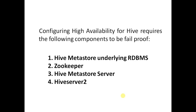In this video we will discuss Hive High Availability. We have seen a steady adoption of Hive service among our customers, and due to this increase in demand we need to make sure the performance and availability of Hive is not compromised. For Hive high availability, we mainly need to focus on three parts: the underlying database (MySQL, Oracle, Postgres, or any relational database), the ZooKeeper service, and the Hive Metastore Server and HiveServer2.